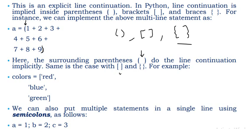We can also put multiple statements on a single line using a semicolon. For example: a equals 1 semicolon b equals 2 semicolon c equals 3. These are three valid statements on a single line, each separated by a semicolon.